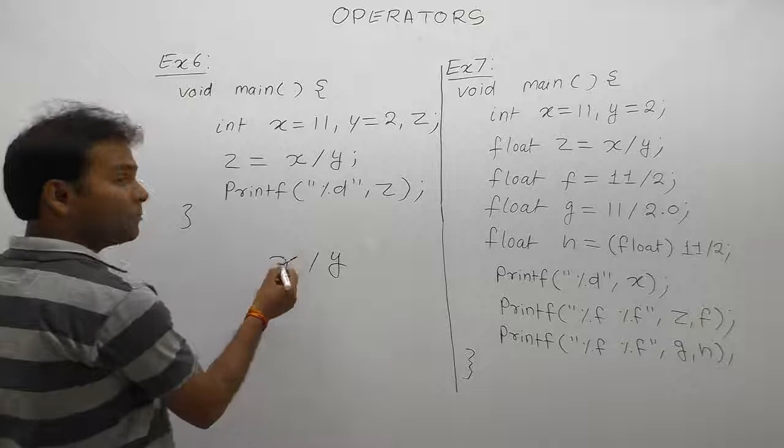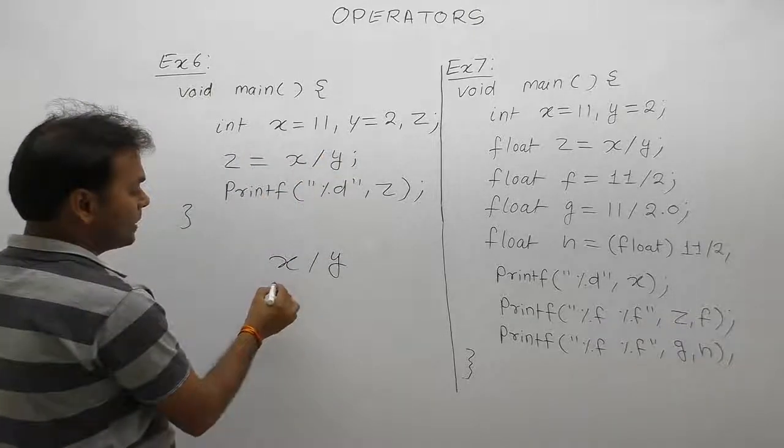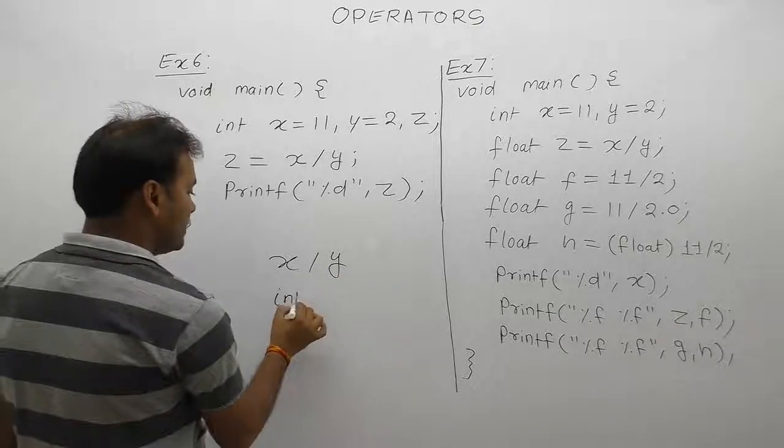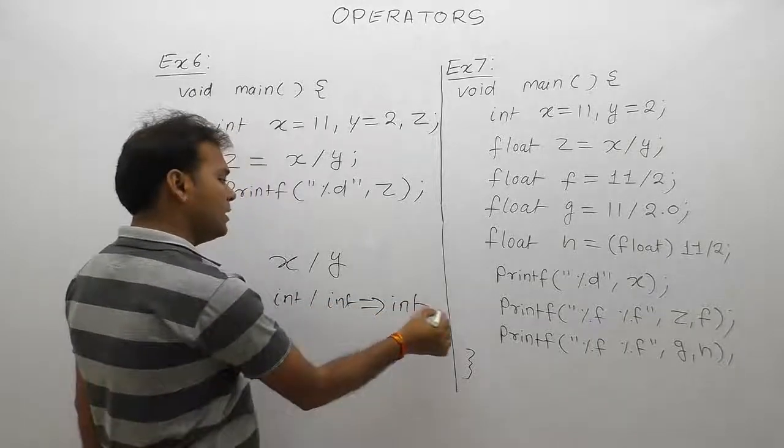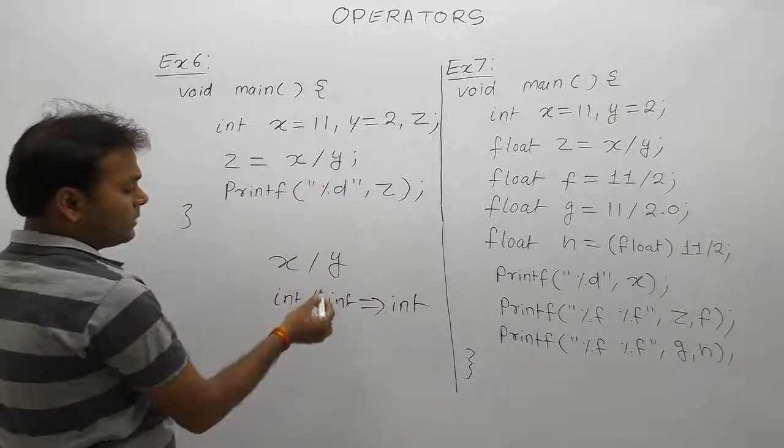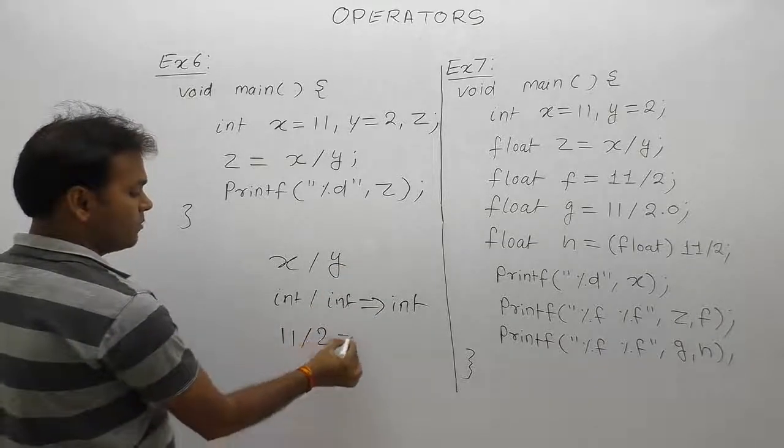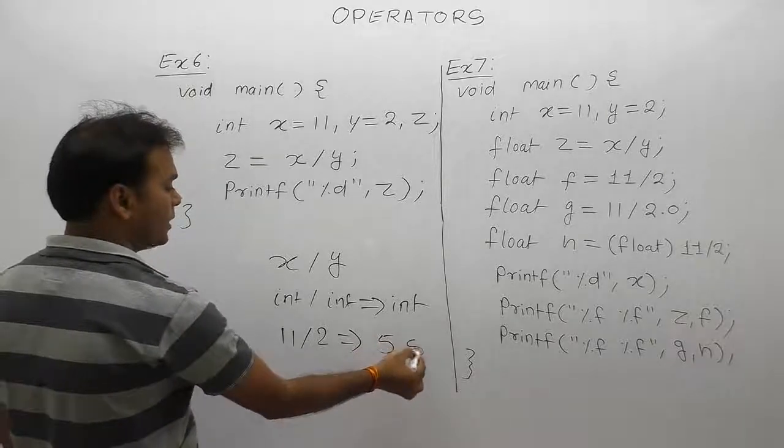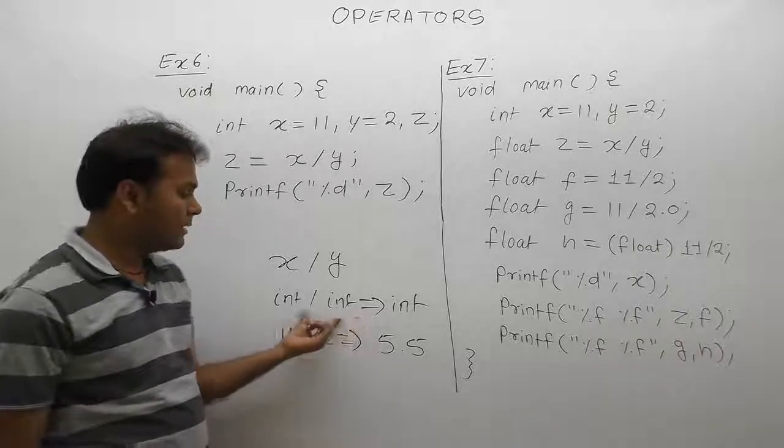First operand x and y are both integer types. When both operands are integers, the result is also integer. This is the normal case of mathematical form. To perform division, x has value 11 and y is 2. The division 11 divided by 2 equals 5.5, but according to integer rules...